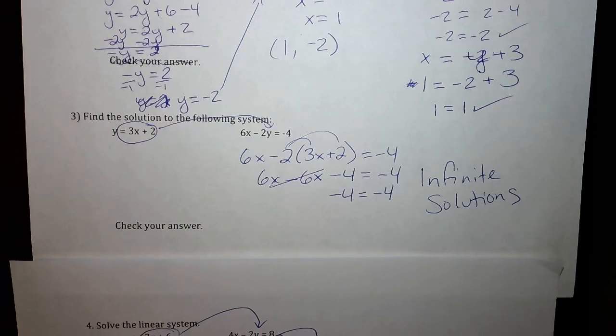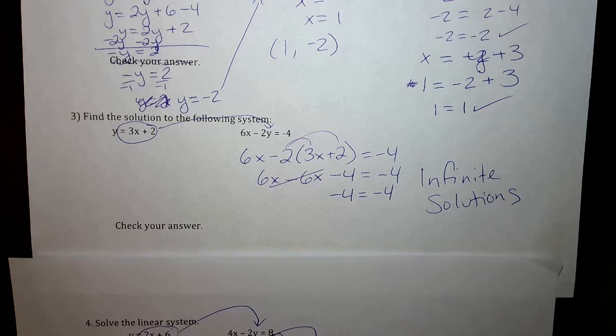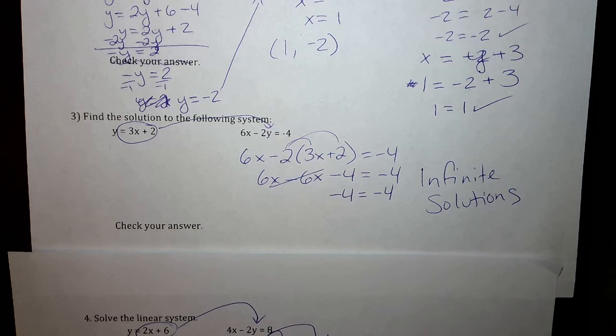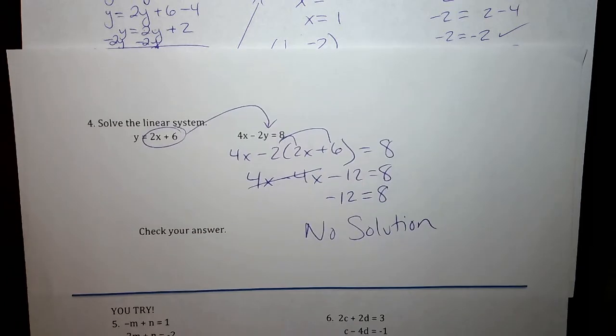In the infinite solution case, it doesn't matter what I plug in for x. Negative 4 is always going to be equal to negative 4. The x's will cancel each other out. Negative 4 will always be negative 4 so that's infinite. X's cancel out or y's cancel out if you're doing that one. And negative 12 equals 8. Negative 12 is never going to equal 8 so it's no solution.